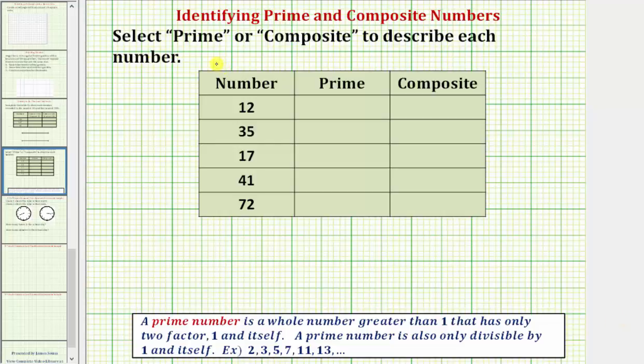In this question we're asked to select prime or composite to describe each number. Let's review the definition of a prime number. A prime number is a whole number greater than one that has only two factors, one and itself.